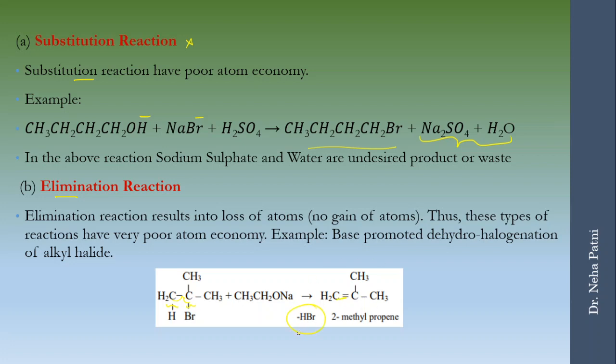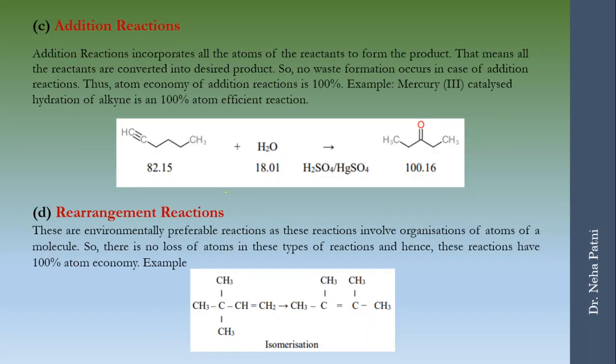Elimination product also comes along with a byproduct so obviously poor atom economy is there. Let us see two different types of reaction. In addition reaction, definitely addition is there so the reagents are going to be added. That means there will be only one product and that is how here the atom economy is near 100 percent. So this type of reactions are always preferred.